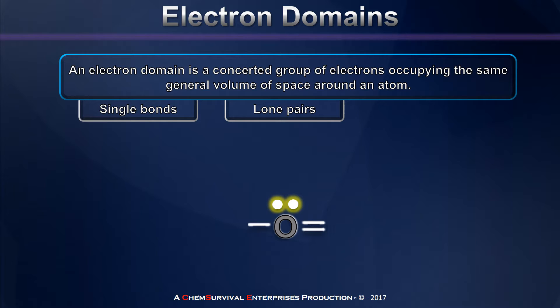Bonding electrons also can form domains. Single bonds, like this bond on the left side of my central atom, constitute an electron domain because even though they're being shared with another atom, they're confined to a certain region of space around the central oxygen. In the case of multiple bonds, they can also be formed as electron domains. I have a double bond in which all four of the electrons involved are confined within the same general region of space around the central atom. So even though there are twice as many electrons in that double bond, it still only counts as one electron domain.